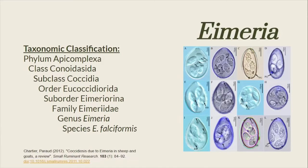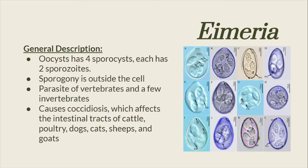Here is the taxonomic classification of the genus Eimeria. Oocysts have four sporocysts, each with two sporozoites. Sporogony is outside the cell, and it is a parasite of vertebrates and a few invertebrates. It causes coccidiosis, which affects the intestinal tracts of cattle, poultry, dogs, cats, sheep, and goats.